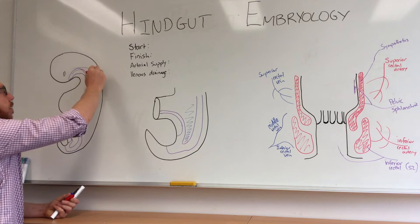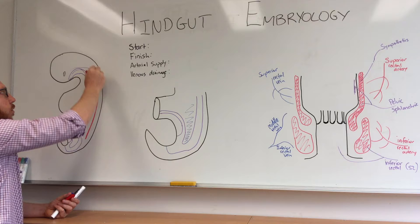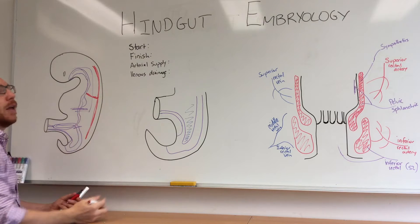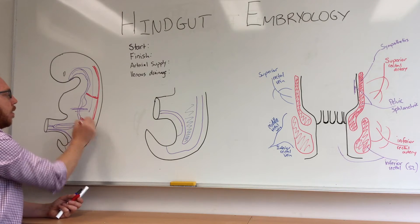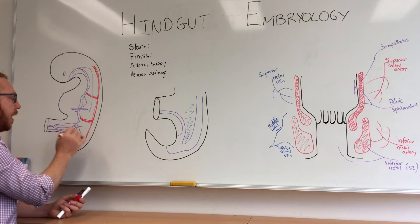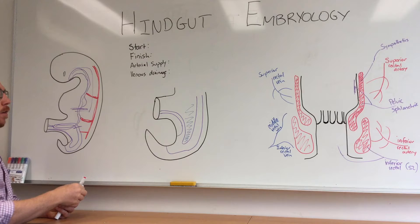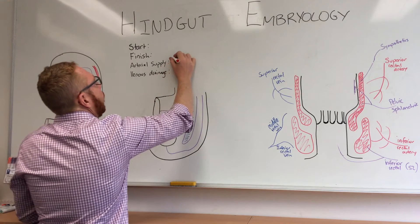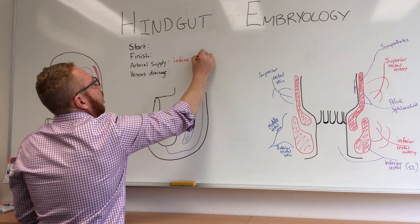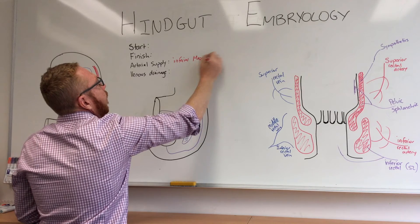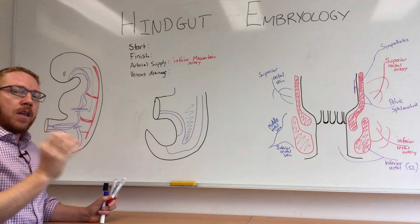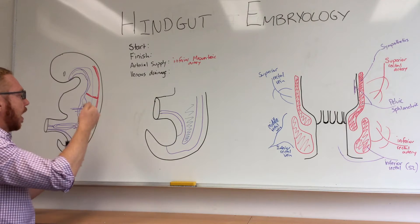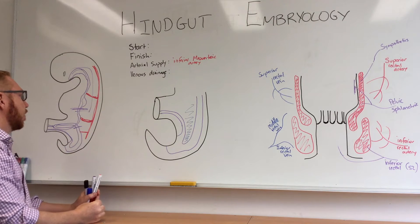The best way to know where the hindgut starts is from the blood supply. The aorta runs on the dorsal aspect of the embryo. The foregut is supplied by the celiac trunk, and the midgut by the superior mesenteric artery, which leaves the hindgut to be supplied by the inferior mesenteric artery. The demarcation point between the midgut and hindgut is where those two arteries anastomose — the watershed area.